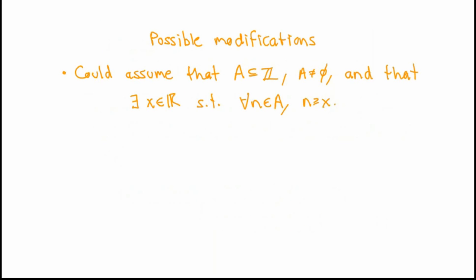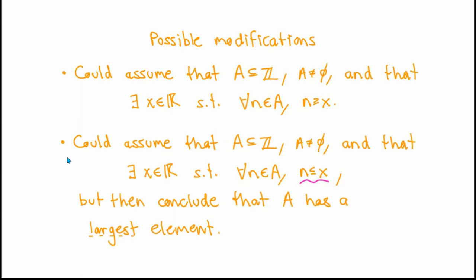As with the principle of mathematical induction, there are a couple of obvious possible modifications when we're trying to apply the well-ordering principle. First of all, instead of assuming that A is a non-empty subset of the natural numbers, we could assume that A is a non-empty subset of the integers which is bounded below, say by some real number x. Then by essentially the same argument, we could still conclude that the set A has to have a smallest element. Another obvious modification: if A is a non-empty subset of the integers which is bounded from above by some real number x, then a simple modification of the argument would allow us to conclude that A has a largest element. This is also sometimes useful in practice.